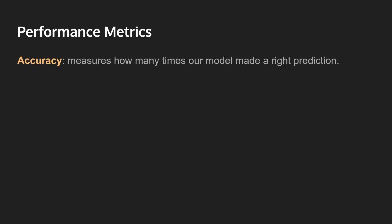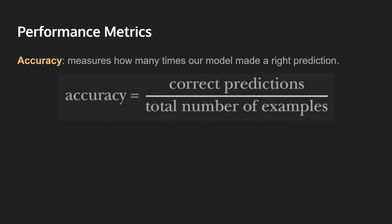So let's look at the most simple performance metric. The most basic one is called accuracy, and we use accuracy daily, actually. It basically measures how many times our model made the right prediction. For example, if we have 100 input samples and our model made a correct prediction of 90, then our accuracy is just 90%. It's simply the number of correct predictions over the total number of examples. Accuracy is the simplest way to measure the goodness of our model.